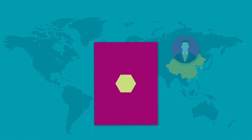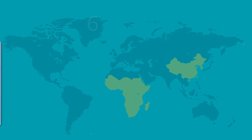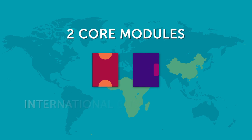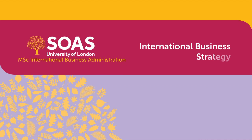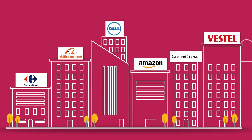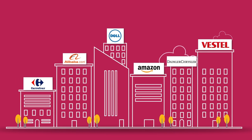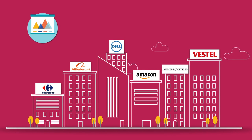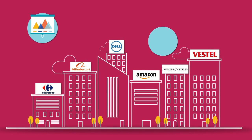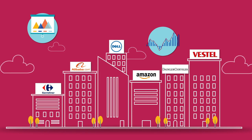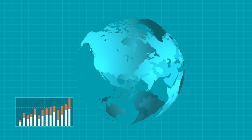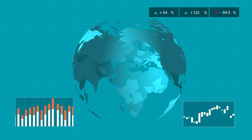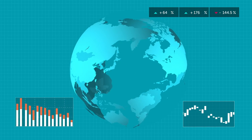The course comprises six modules, including two core modules, the first of which is International Business Strategy. Focusing on international business case studies across a spectrum of industries, from retail to manufacturing, the module examines the causes and effects of success and failure, enhancing your strategic insight and risk management expertise, and looking at how marketing and pricing strategies can fly or flop, depending on localised factors in different countries.